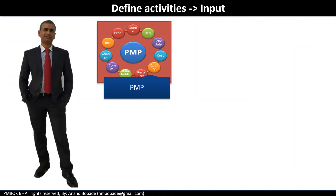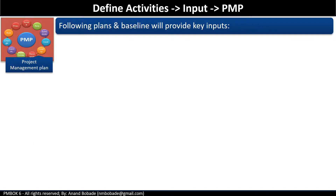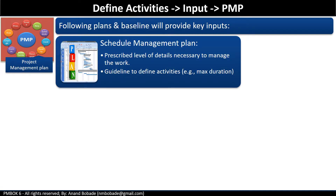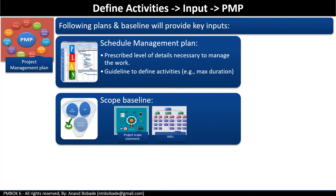Inputs are: project management plan, enterprise environmental factors, and organizational process assets. The components of the project management plan that are input to this process are: the schedule management plan, which contains guidelines for taking the WBS and using it to create an activity list; and the scope baseline, which is the approved version of the project scope statement, WBS, and WBS dictionary. The WBS further breaks down scope to the level of work packages, and the WBS dictionary contains information about constraints or other important details associated with each work package.